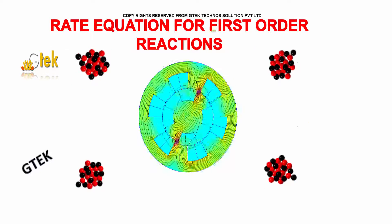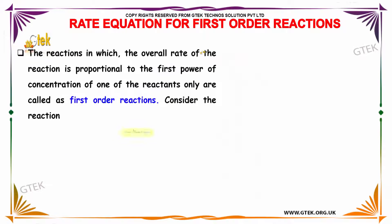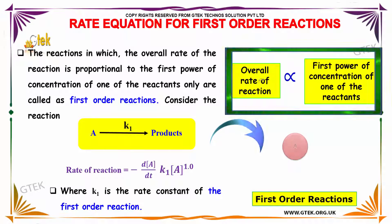Let's discuss the rate equation for first-order reactions. The reaction in which the overall rate of the reaction is proportional to the first power of the concentration of one of the reactants is called a first-order reaction.